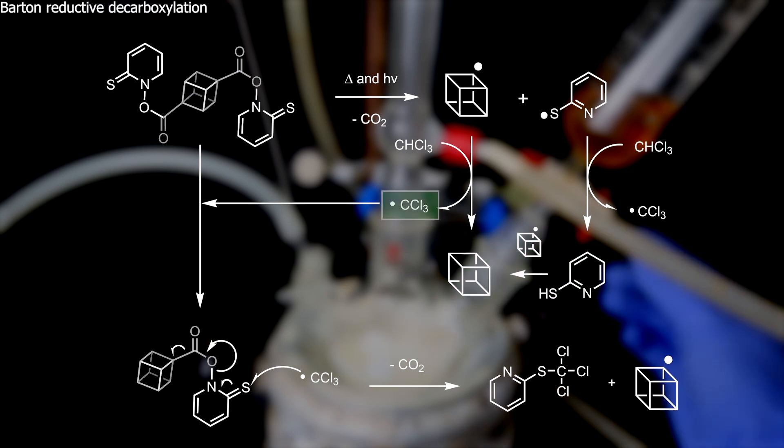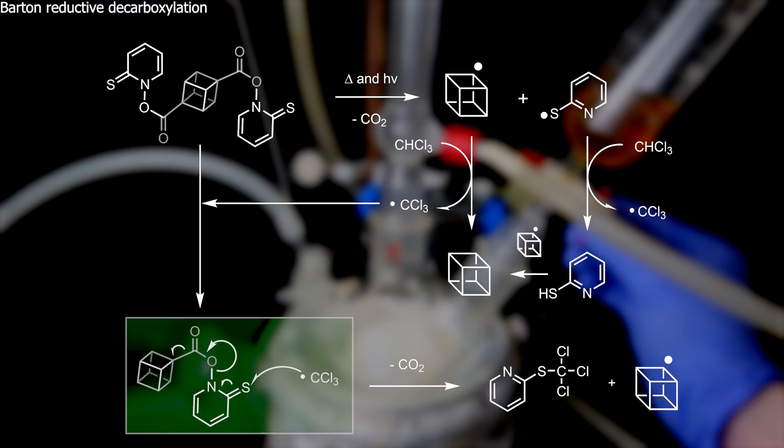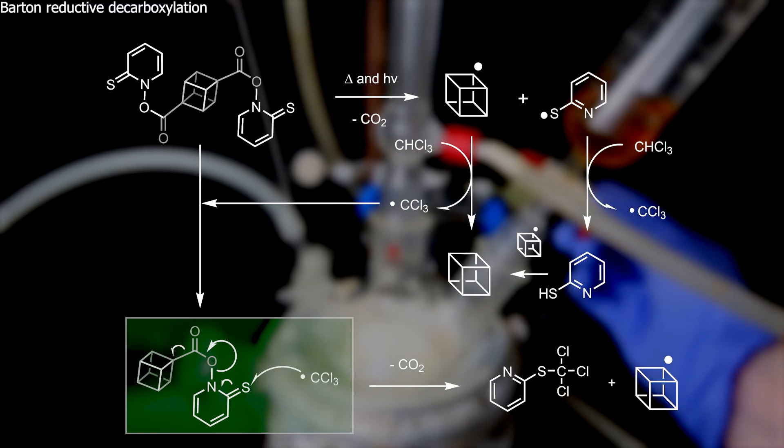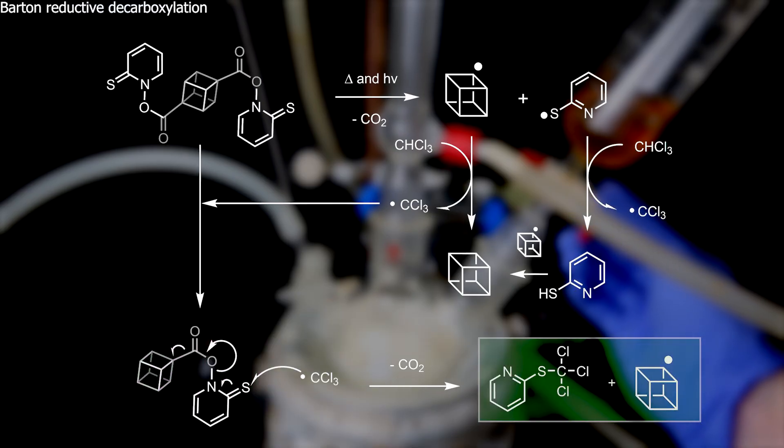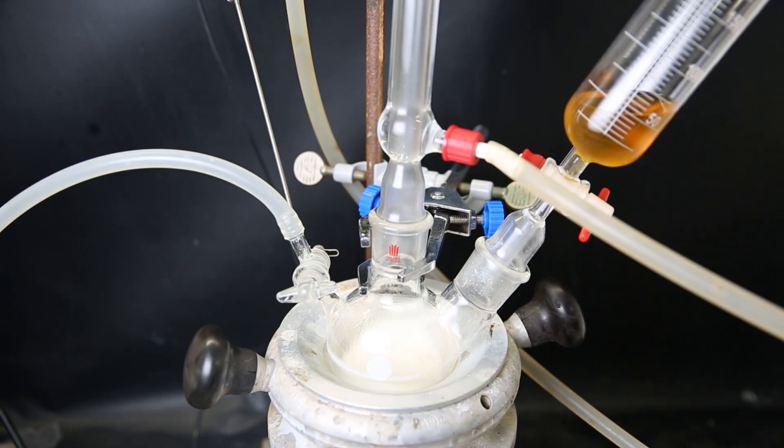The chloroform radicals that are formed in this process can continue to react with the thiohydroxamate esters, quenching themselves and forming more cubane radicals. These cubane radicals continue to chain by taking up a hydrogen from chloroform, which can continue to react with more thiohydroxamate esters and forming more cubane radicals.